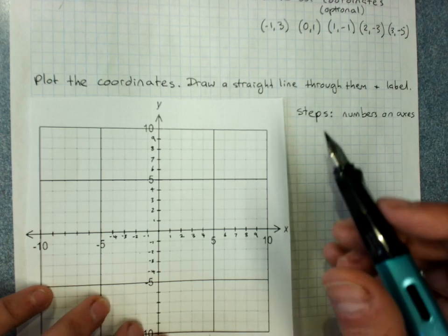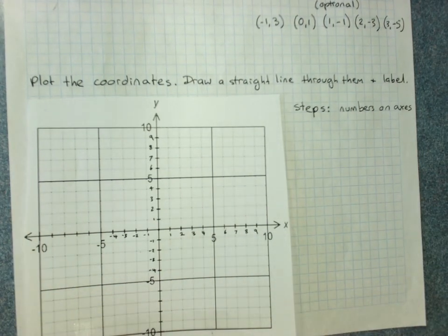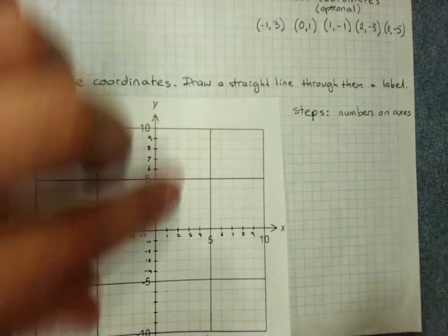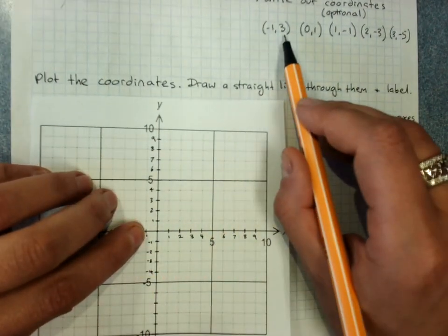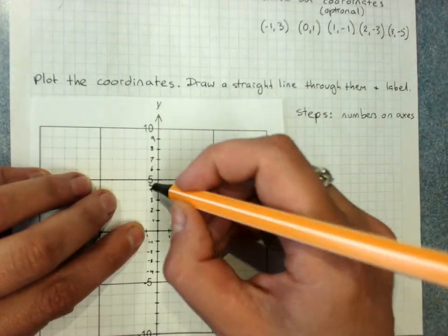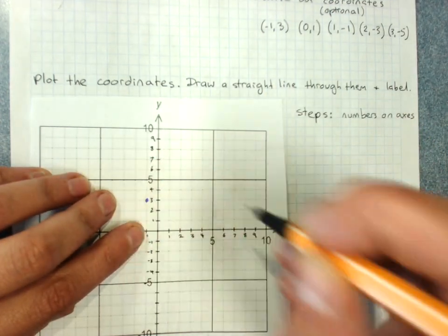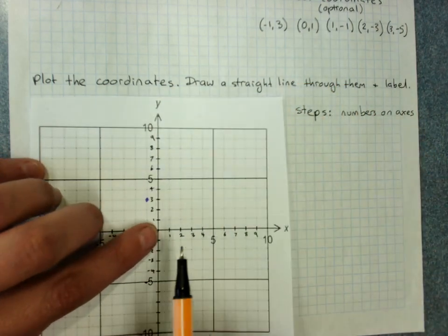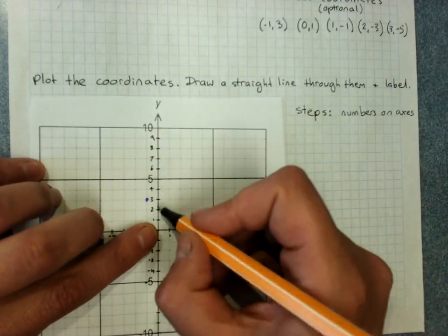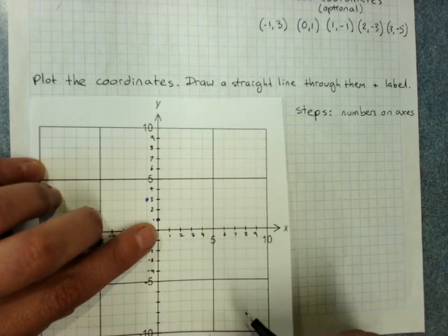Now plot your coordinates. That means the x and then the y. So negative 1 on the x axis, lining up with 3 on the y axis. Next coordinate.